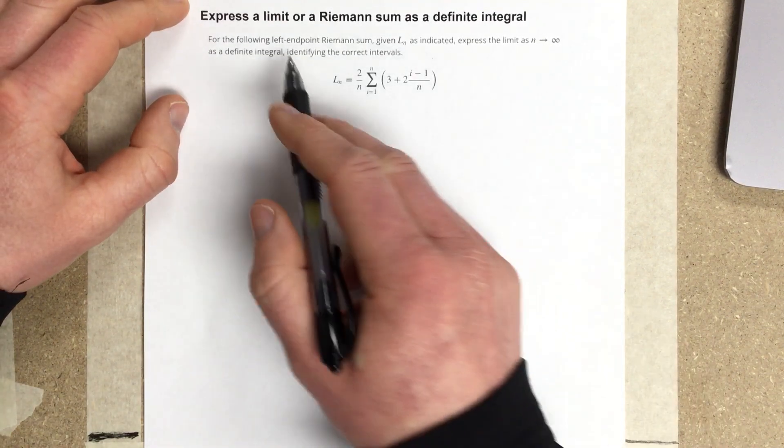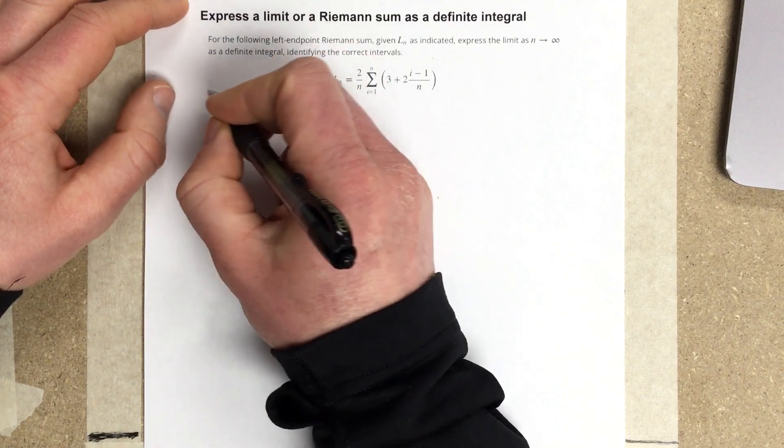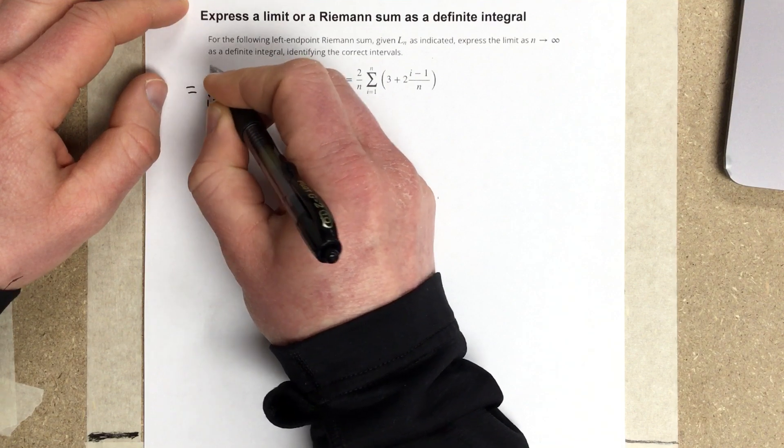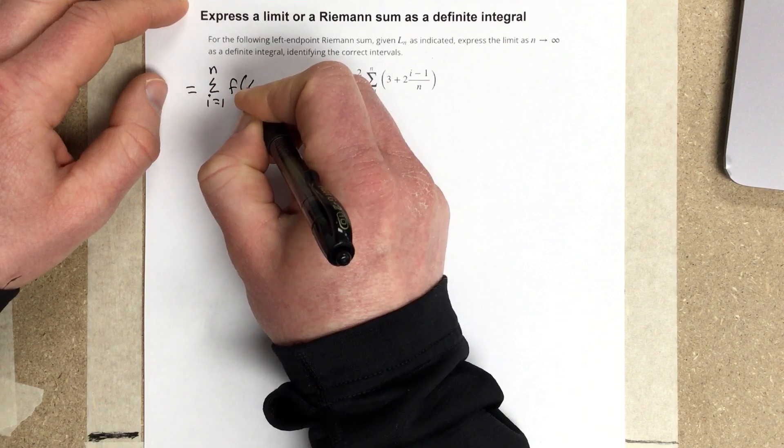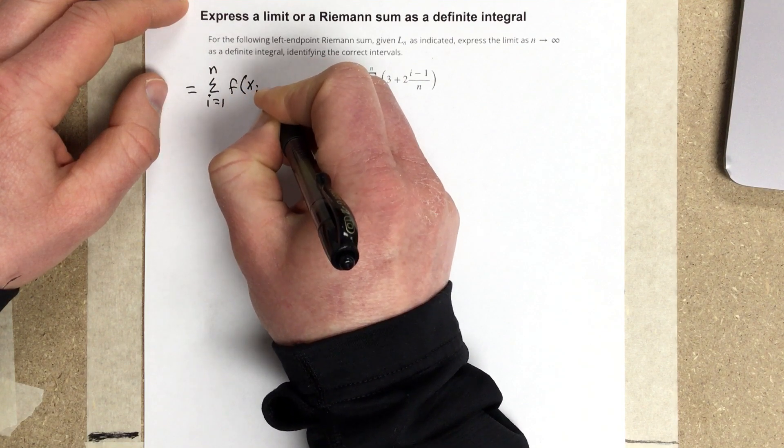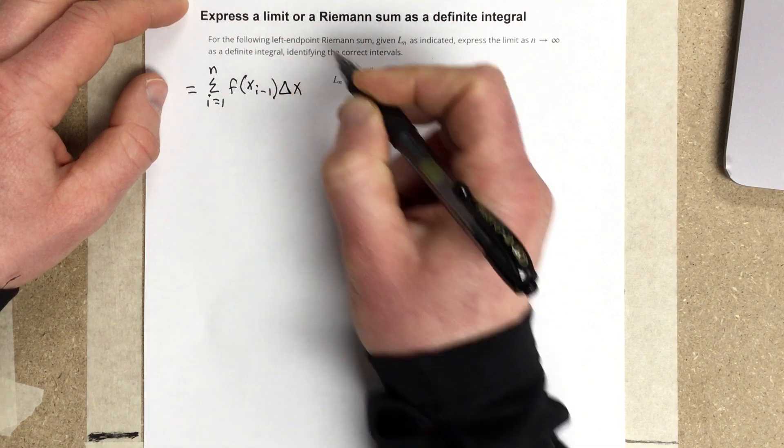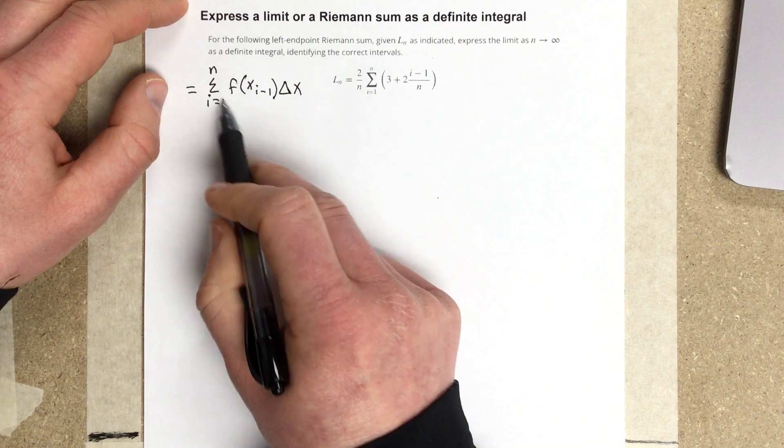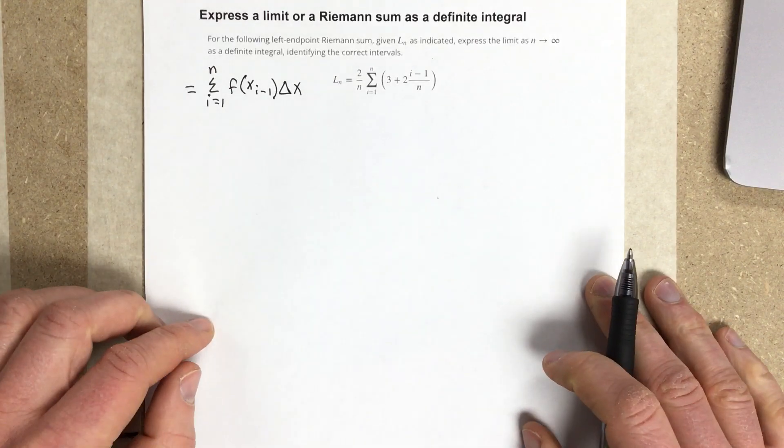Because they say left endpoint Riemann sum, we better write that that really means we're going to have the summation from i equals 1 to n of f(x_{i-1}) times Δx. This is what a left endpoint Riemann sum has looked like in our previous sections and previous problems that we've done.